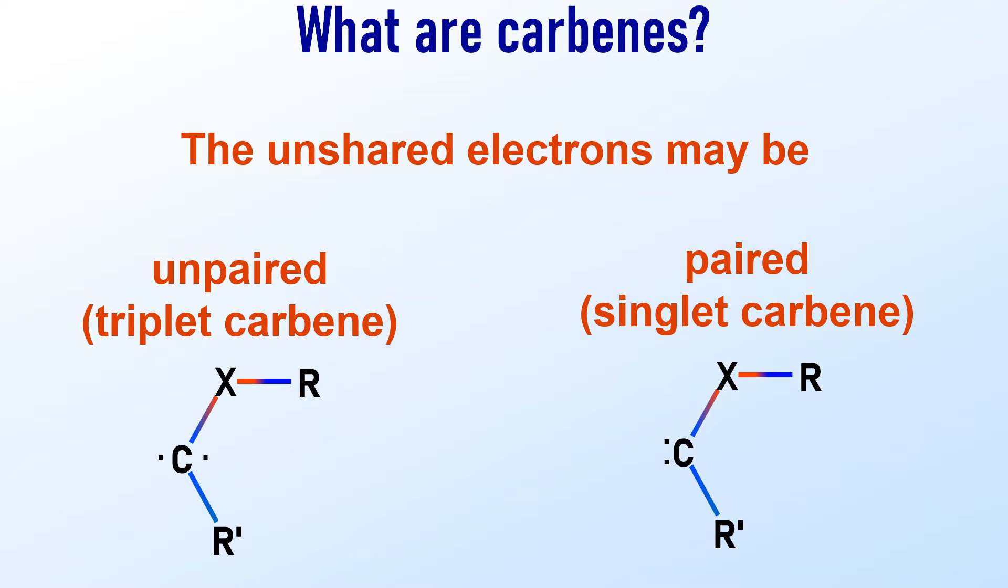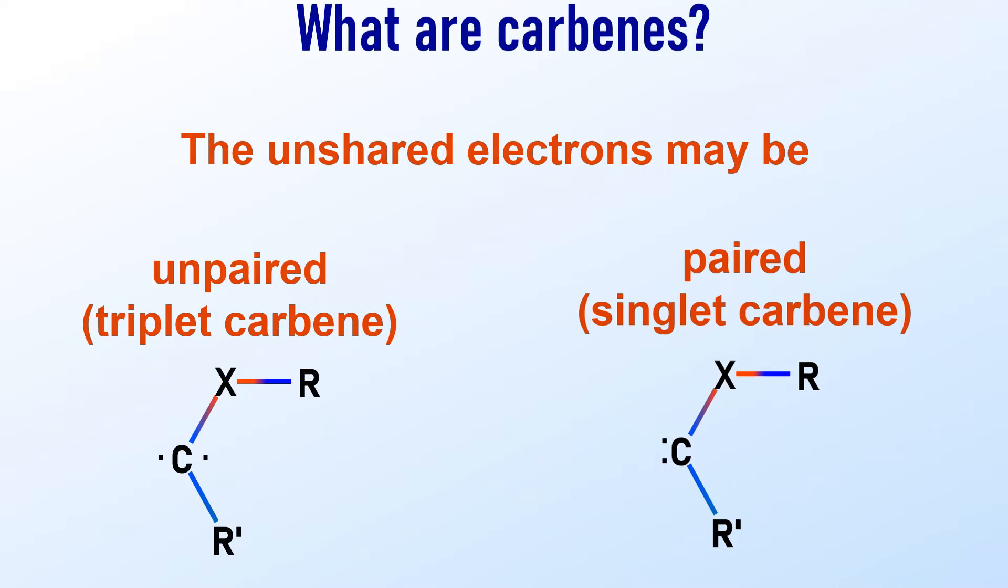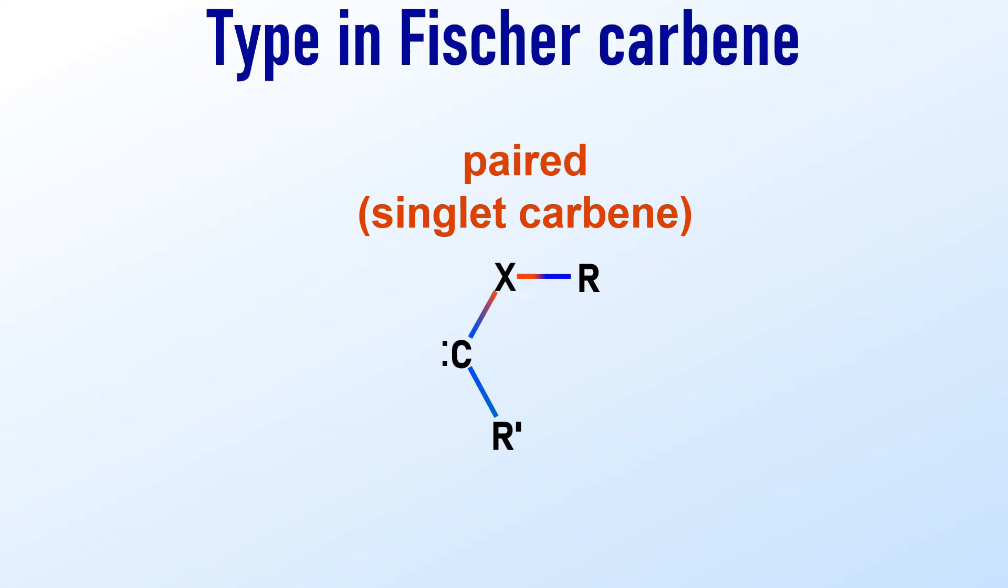The unshared electrons may be unpaired or paired up. The carbene with unpaired electrons is referred to as triplet carbene, while that with paired electrons is called singlet carbene. In the case of Fischer carbene, we find the singlet carbene.